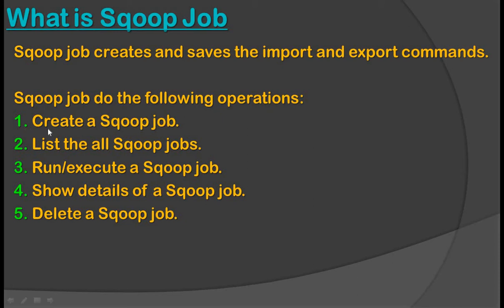The Sqoop job supports the following operations: first, create a Sqoop job; second, list all Sqoop jobs; third, run or execute a Sqoop job; fourth, show the detail of a Sqoop job; and fifth, delete a Sqoop job. So by using a Sqoop job we can create, list, run, show details, or delete a job.